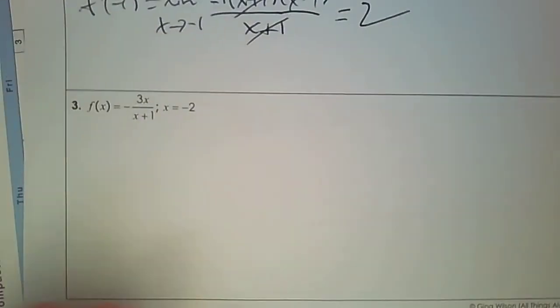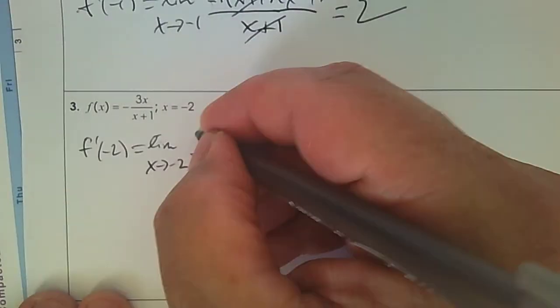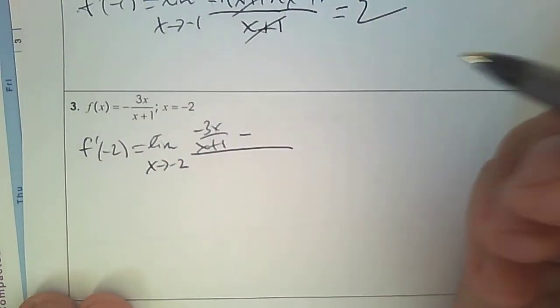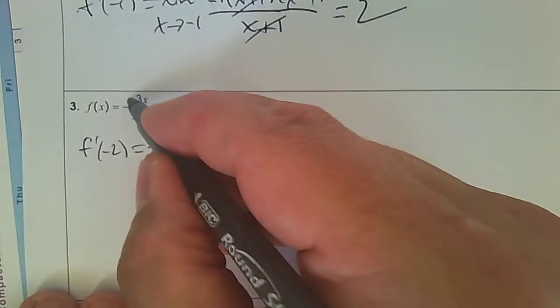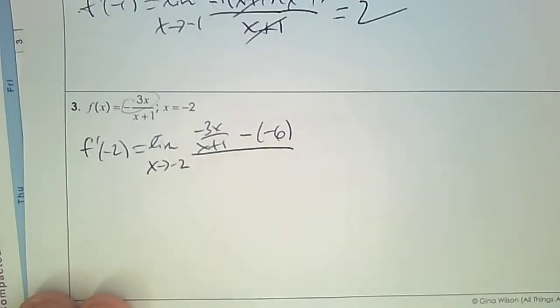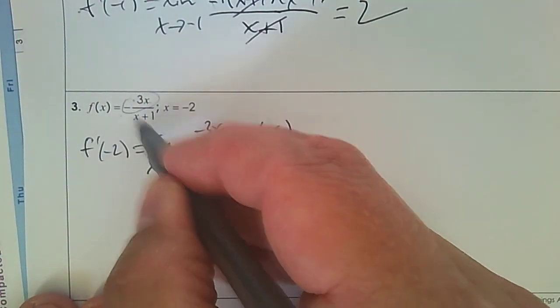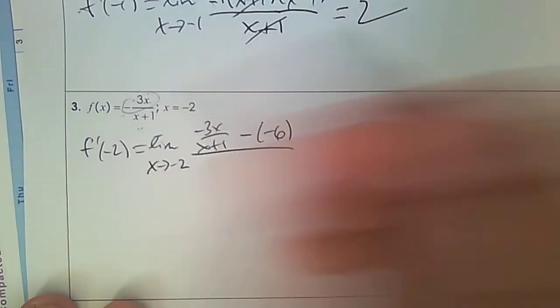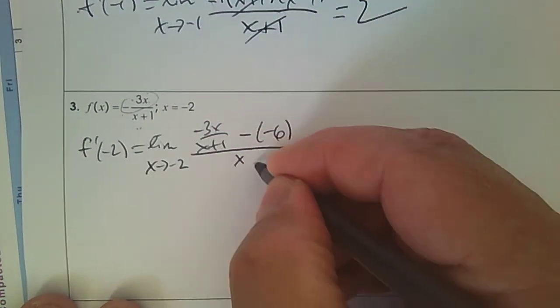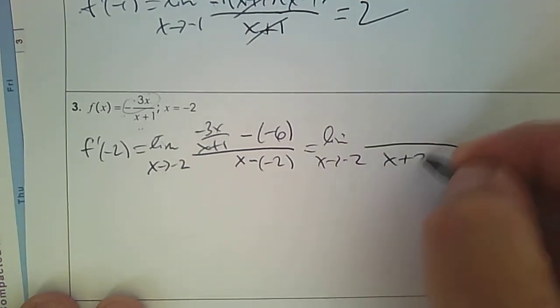One more time with limits. Find the derivative at negative 2 using the limit definition. So as x approaches negative 2, it's f(x) subtract — now plug in negative 2 — so that becomes positive 6 over negative 1, that's negative 6. Because a negative and a negative makes it positive, but then you have a negative and a negative 6 — the denominator, we actually have three negatives — so that's why it's negative 6. And that's all over x subtract negative 2. Let's clean this up. So the denominator is really x plus 2.